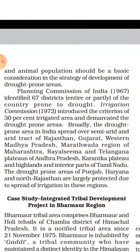The Planning Commission of India identified 67 districts as drought prone areas. The Irrigation Commission in 1972 used the criteria that areas with less than 30% irrigated land would be classified as drought prone areas.